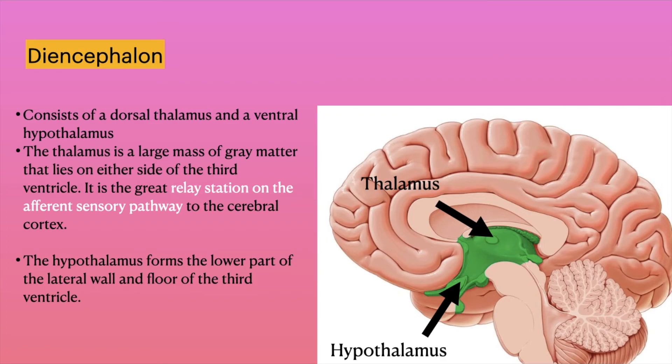The diencephalon consists of the dorsal thalamus and the ventral hypothalamus. The thalamus is a large mass of grey matter that lies on either side of the third ventricle. It is the great relay station on the afferent sensory pathway to the cerebral cortex.